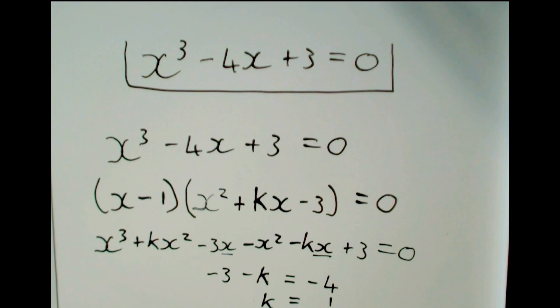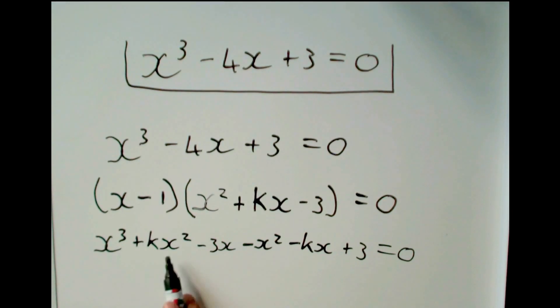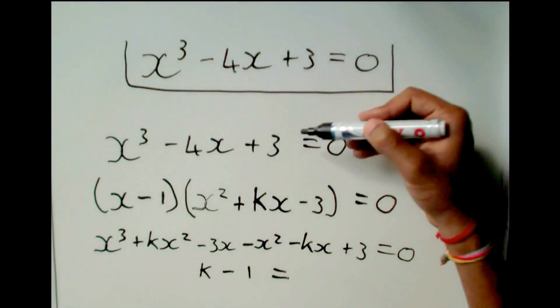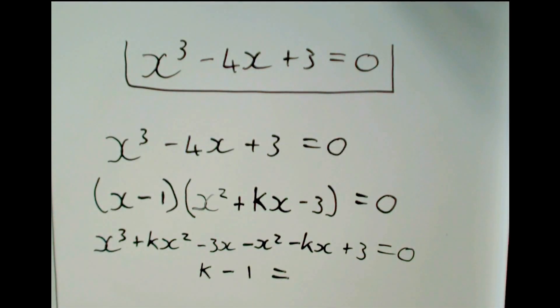Another way I could have done this is we don't look at the x term, right? We could also have looked at the x squared term. The x squareds, I have kx squareds minus 1x squared. So I have kx squareds minus 1x squareds. And that must be equal to how many x squareds we had originally. And originally I don't have any x squareds, so I have zero x squareds.